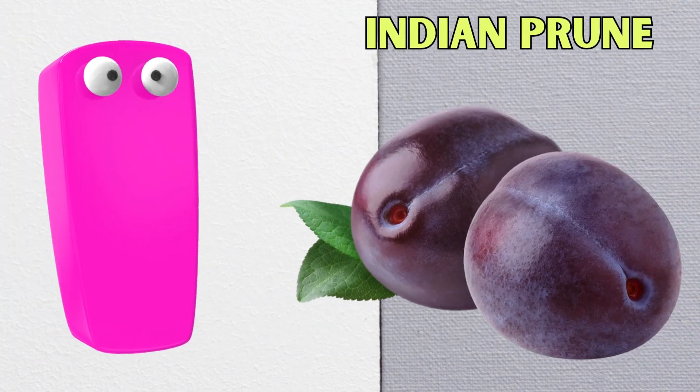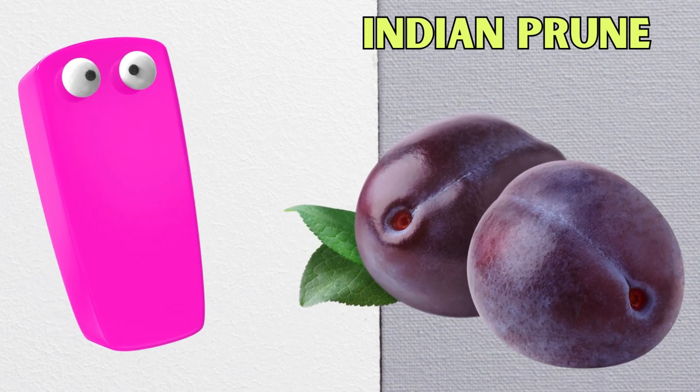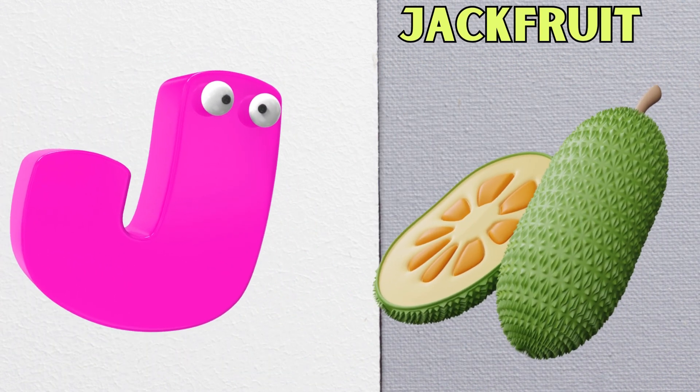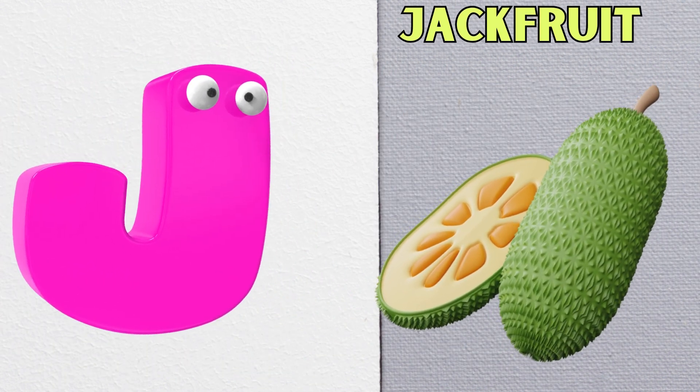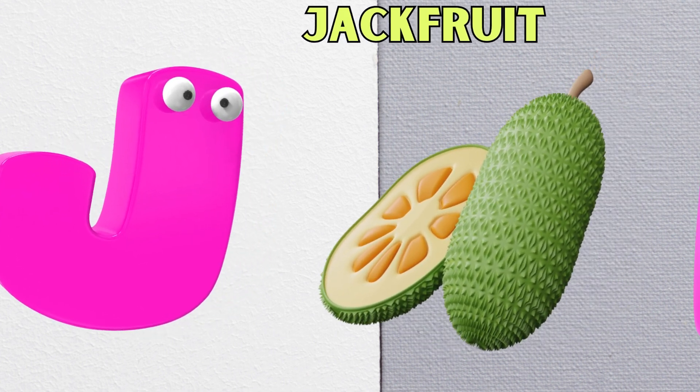I is for Indian prune, i-i-Indian prune. J is for jackfruit, j-j-jackfruit.